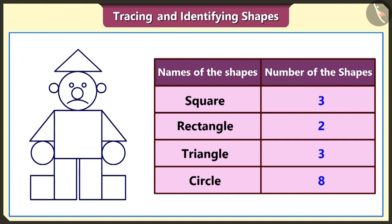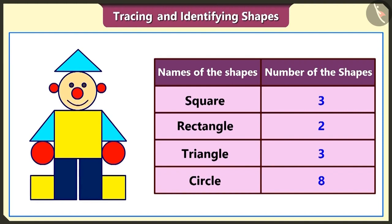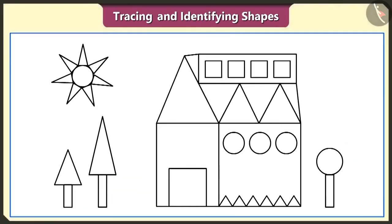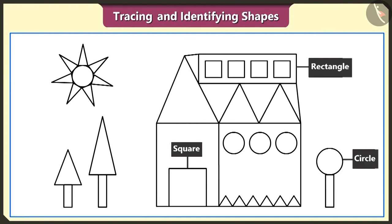But why is he not smiling? Let's fill it with colours. Look Thumpkin, it is smiling after we filled it with colours! Friends, let's see the second example now. This is a figure made by tracing square, rectangle, circle and triangle shapes.